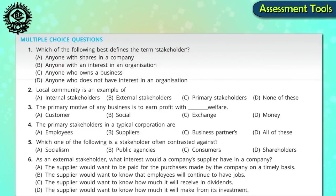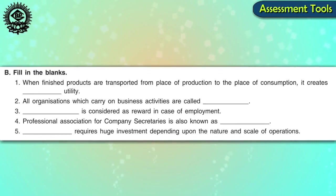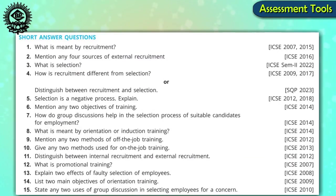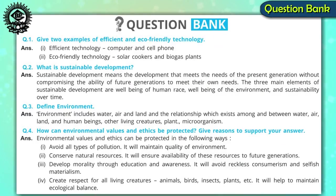Objective type questions such as multiple choice questions and fill in the blanks are given at the end of each chapter, which triggers the analytical skills of students. Short answer questions help to assess the basic knowledge and understanding of the topic, and long answer type questions do the in-depth assessment of the topic. It will also check the retention capacity and the level of understanding of students. A solved question bank is provided at the end of each chapter to assist students in writing answers properly.